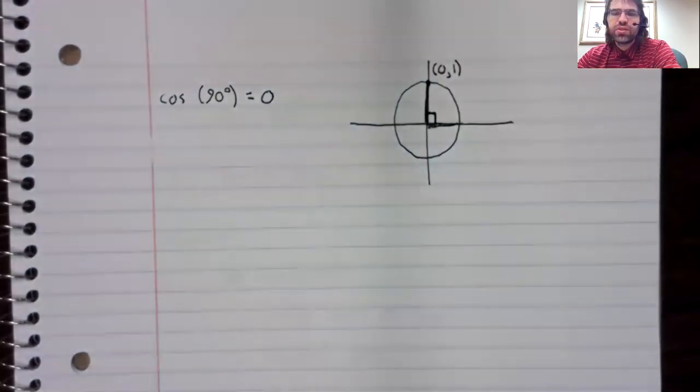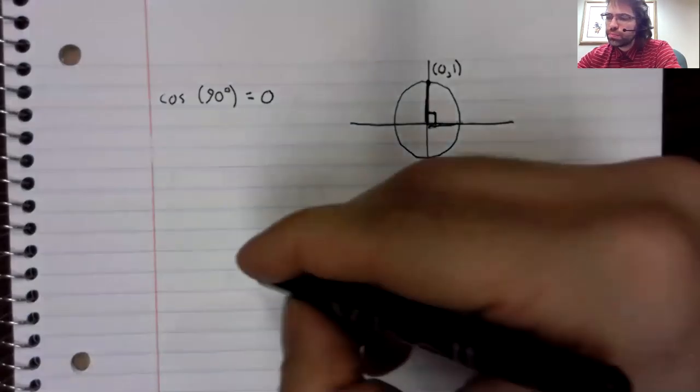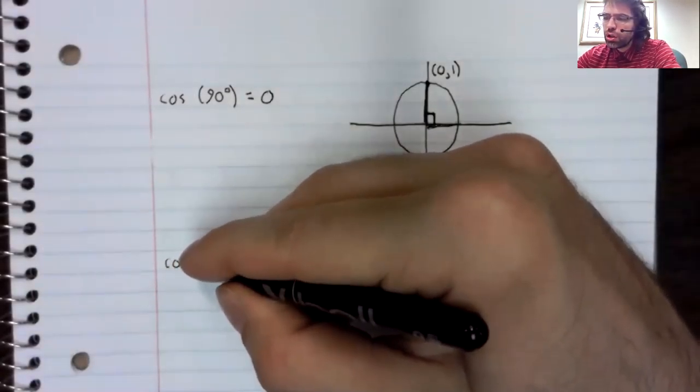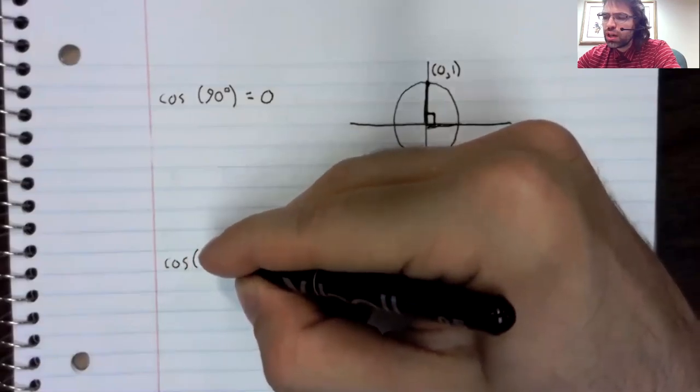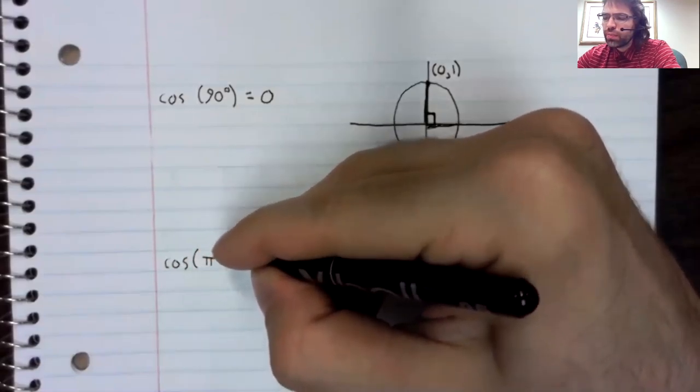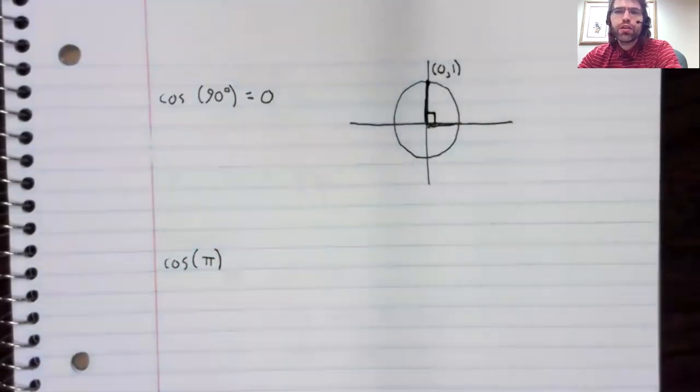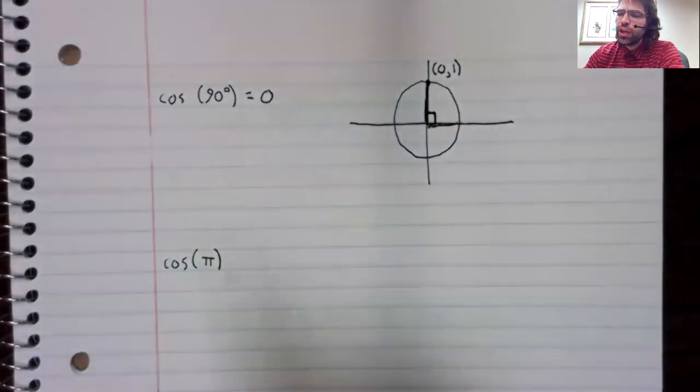this point up here is the point zero comma one. So we can say the cosine of 90 degrees is zero.